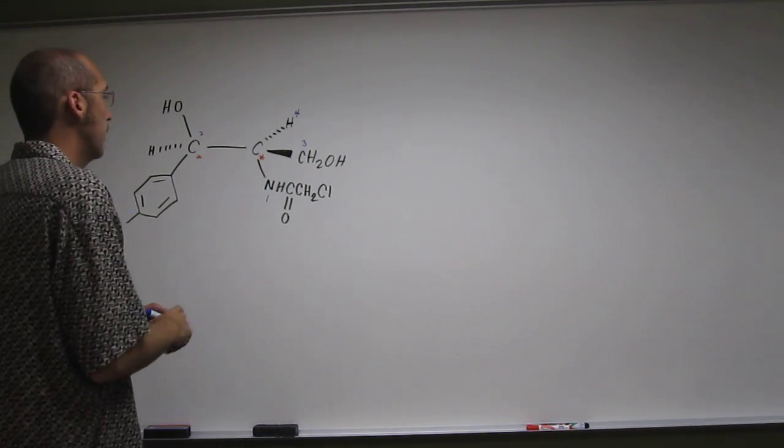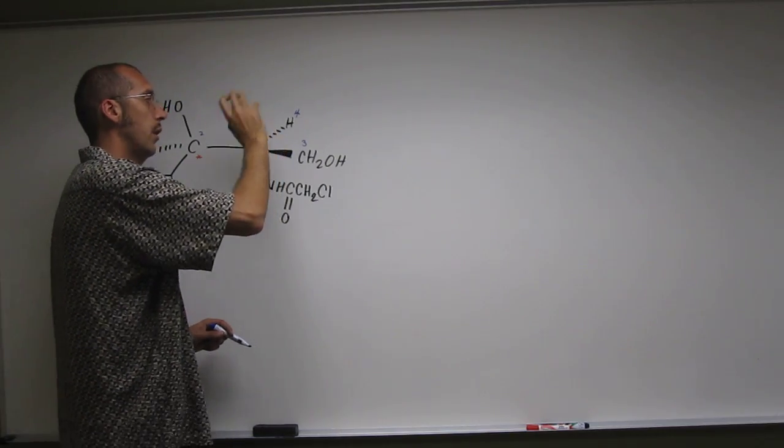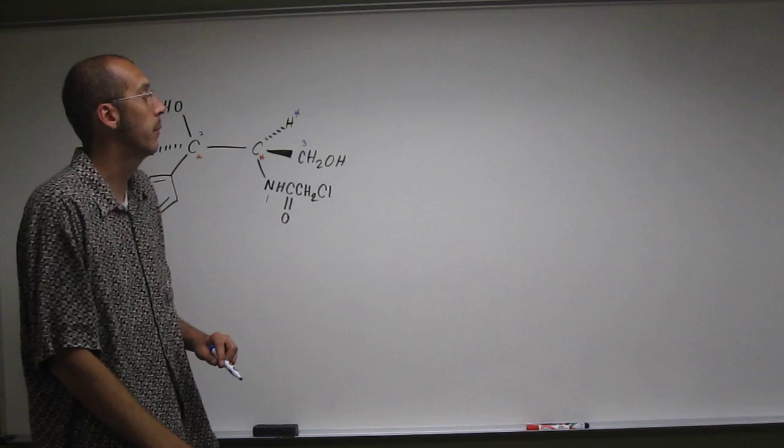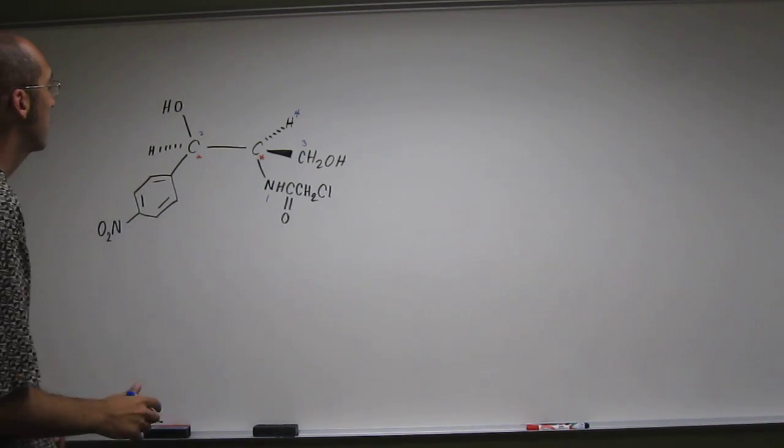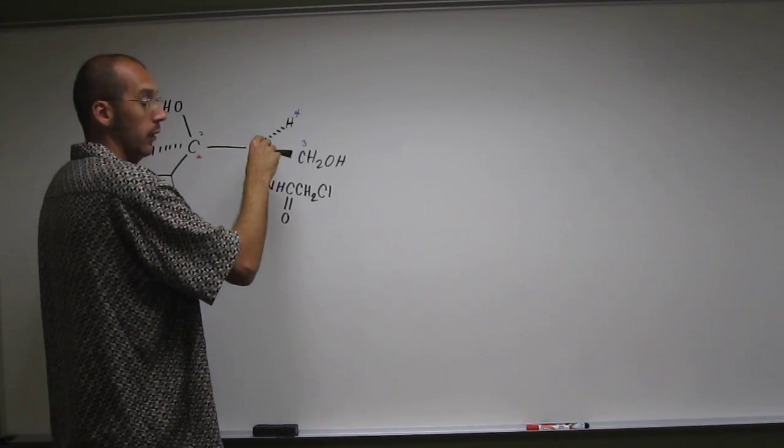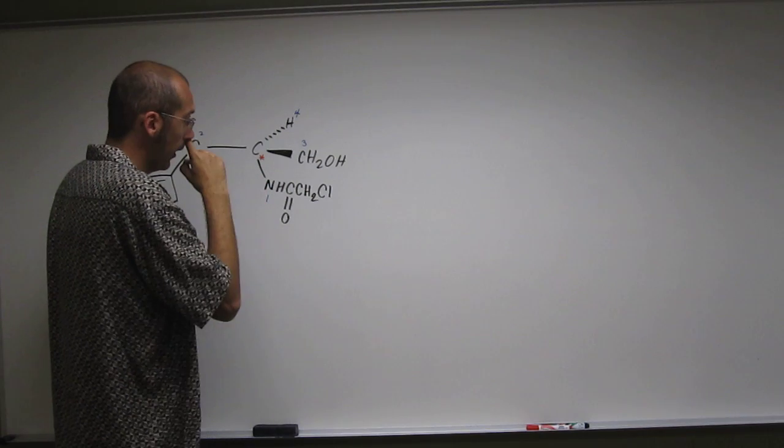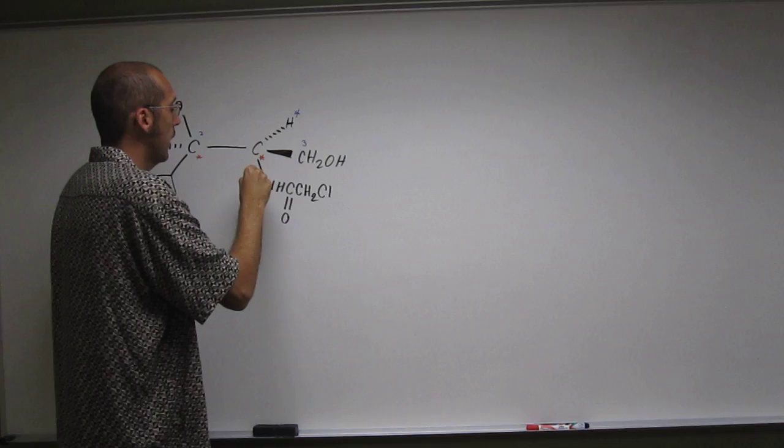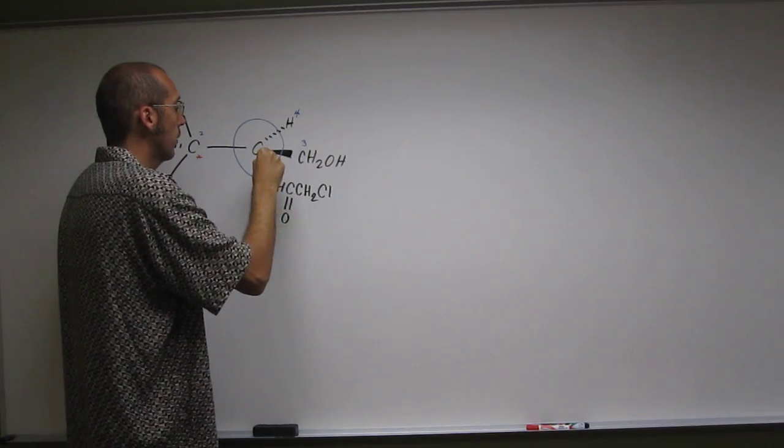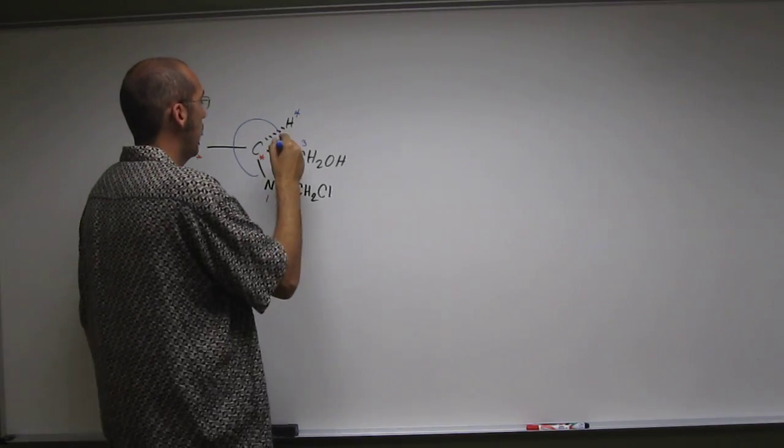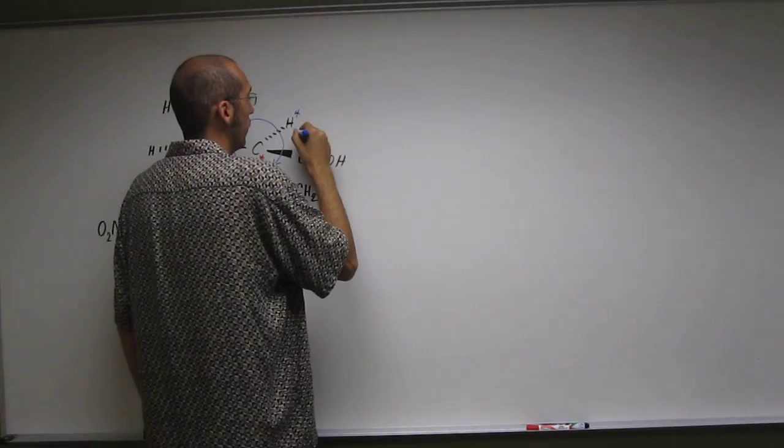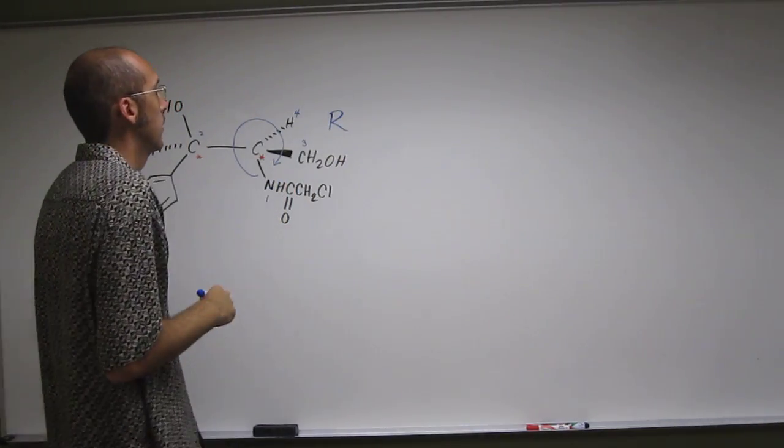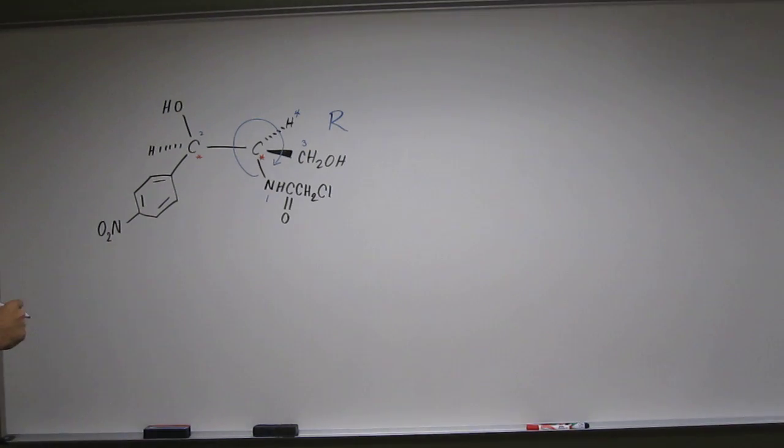And then the next thing you want to do is put the lowest priority group in the back. We're in luck because in this case it's already in the back. So now we just go and do our little rotation arrow like we've done. So here we're going one, two, three. So in this case it's going clockwise. Clockwise is R, remember. So this stereocenter over here is R.